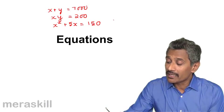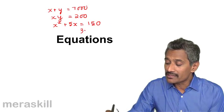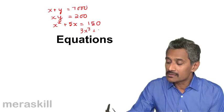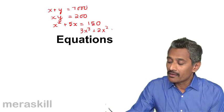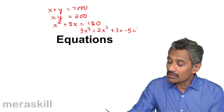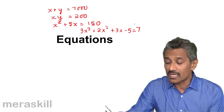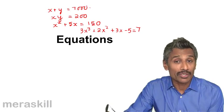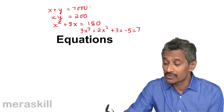And similarly, you may have an equation like 3x cubed plus 2x squared plus 3x minus, say, 5 is equal to 7. So you have various varieties of equations. This we know is called a simultaneous equation in two variables.